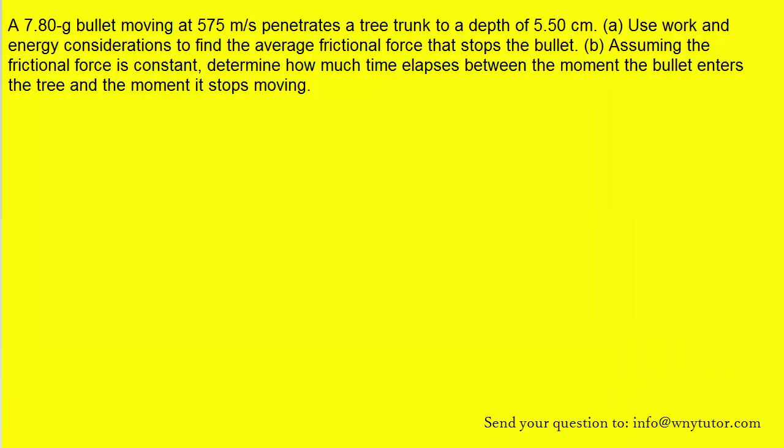As always, if you haven't had a chance to try the question on your own first, pause the video and do so. Now, because this question instructs us to use work and energy considerations to find the frictional force that stops the bullet, we might want to write down a couple of relationships that involve work. The first equation shows us that work is equal to the product of the force acting on the bullet, the cosine of an angle, which we'll talk about momentarily, and the displacement that the bullet undergoes while it is stopping.